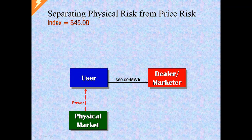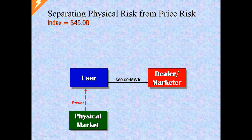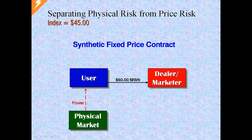In other words, no matter what the index price posting, the user will have a stable cost at $60. The swap, together with the index supply contract, combine to synthesize a fixed price supply contract.